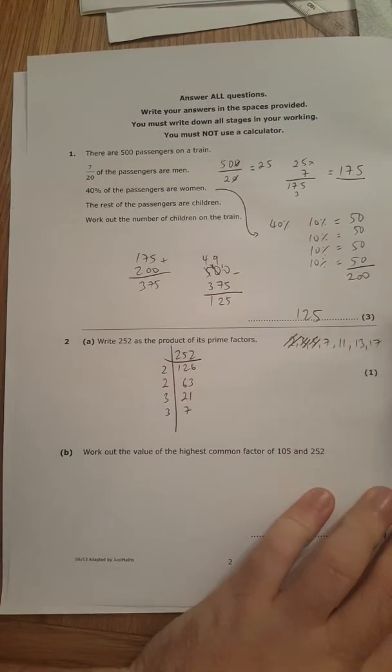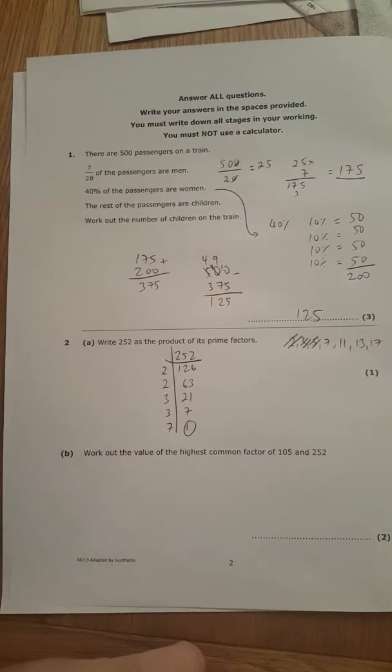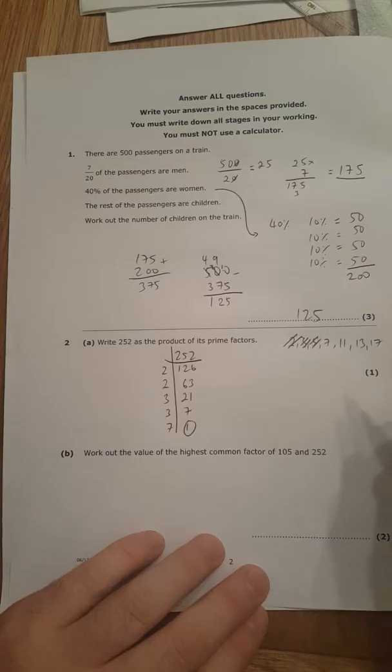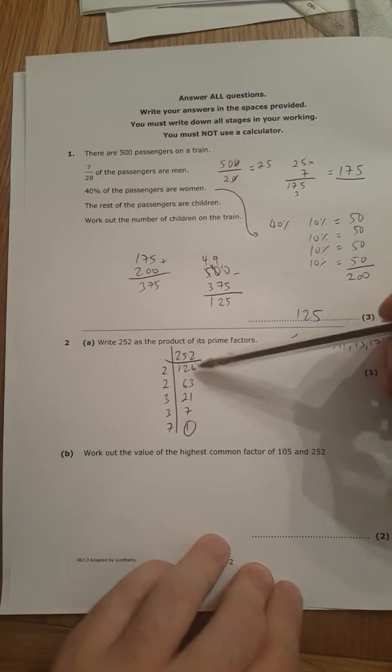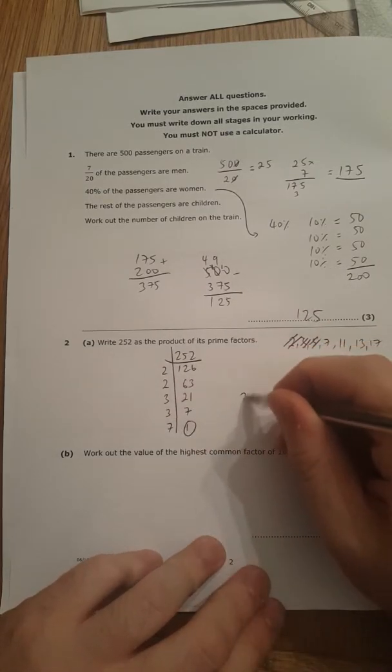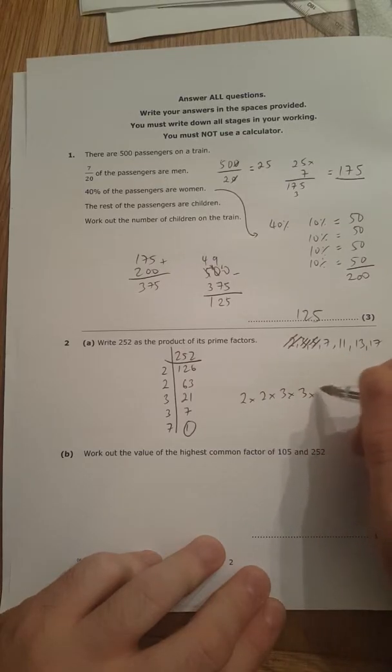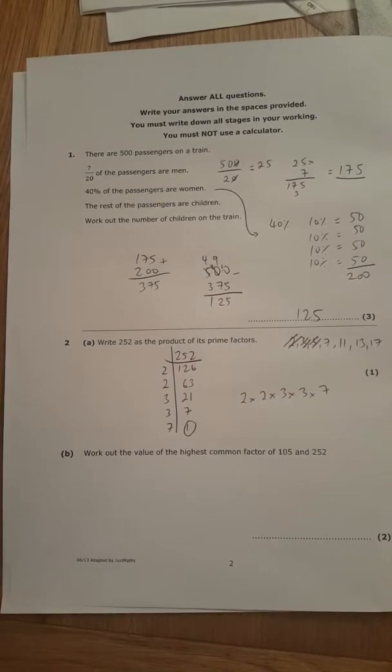3 fits into 21 7 times. 3 doesn't fit into 7, 5 doesn't fit, 7 fits into 7 once. When I've got 1, I know I'm done. That's why I like this method—my prime numbers are allocated down here, my actual solutions down here. So let's write them all out as the product of its prime factors. That's done. You can abbreviate it 2 squared times 3 squared times 7.